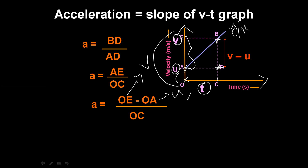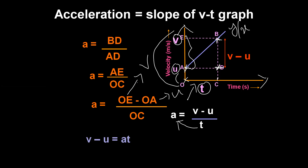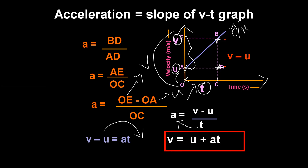Taking these values into the slope formula, acceleration A equals (V minus U) divided by T. This is just a rearrangement. Cross-multiplying T to the other side gives us V minus U equals AT. Transposing U to the right-hand side, we get V equals U plus AT.